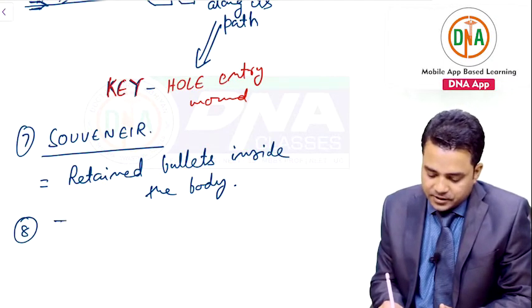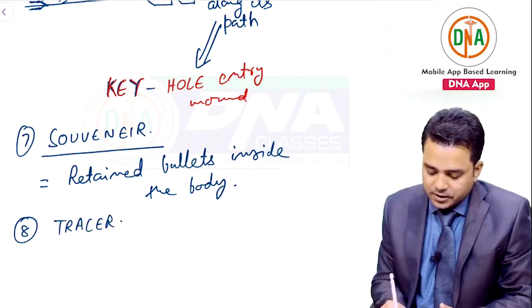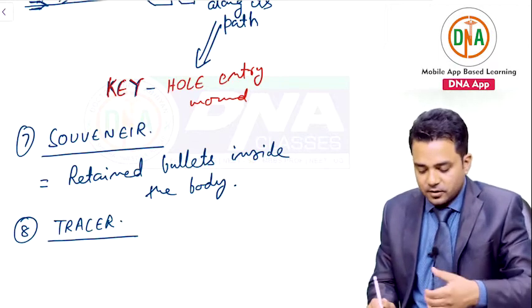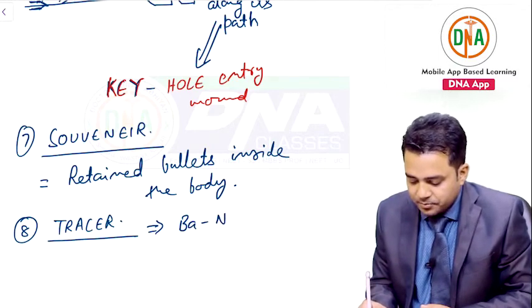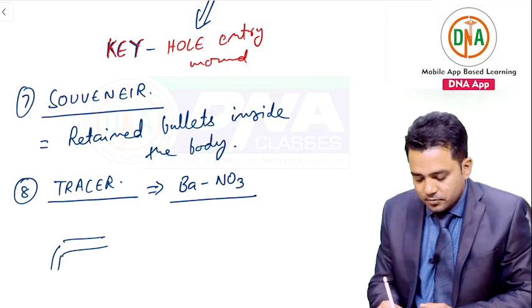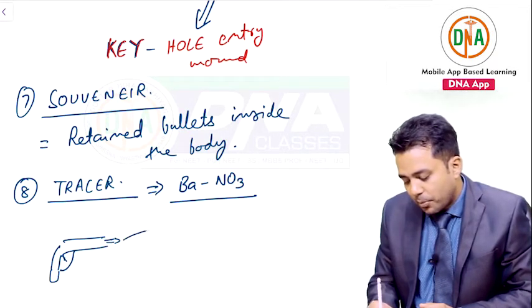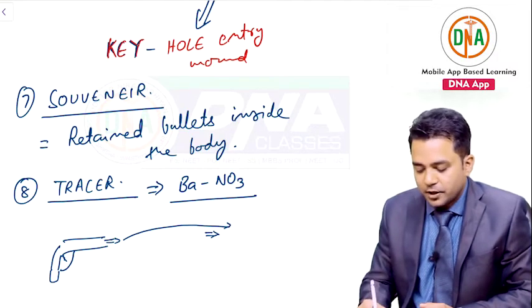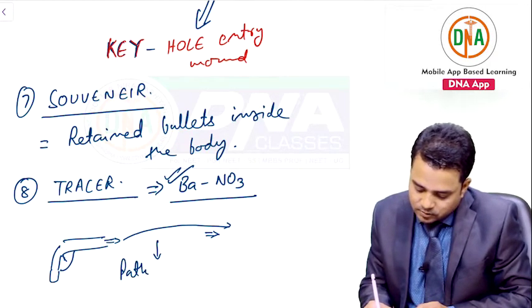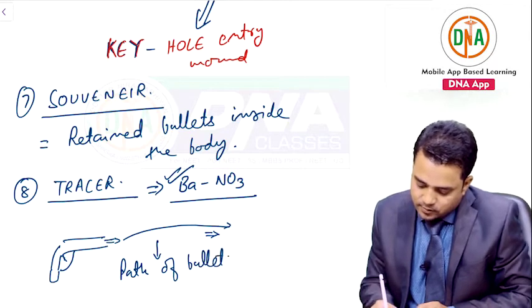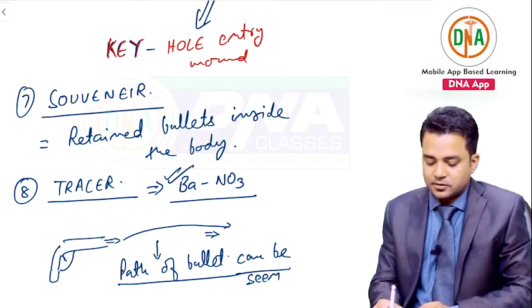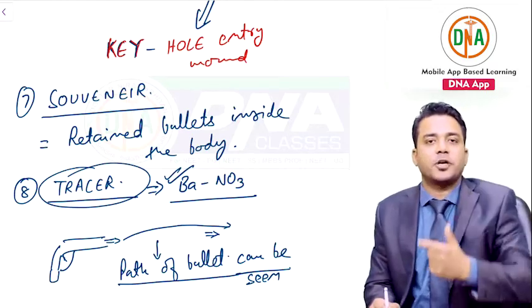Lastly, tracer bullets have a barium nitrate coating. When the trigger is pulled and the bullet comes out, the path of the bullet is illuminated due to burning of the barium nitrate, so the path can be traced. Such bullets are called tracer bullets.